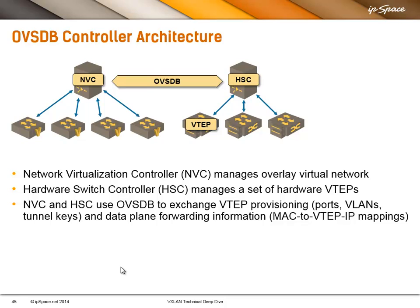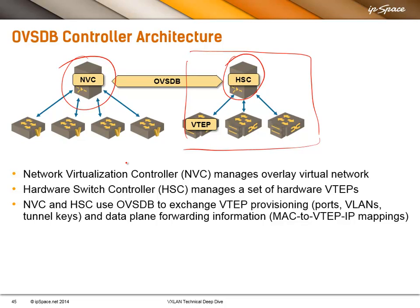The way the OVSDB hardware VTAP schema is defined, you could have a network virtualization controller — NSX, for example — talking to a hardware switch controller, and that hardware switch controller could manage multiple endpoints, multiple VTAPs. Some vendors decided to go down this path: Arista is working on having exactly this architecture, where virtual EOS runs the HSC — the hardware switch controller — and that virtual EOS talks to the individual Arista switches acting as VTAPs. Juniper went for a simpler architecture where the HSC sits on every VTAP, so with Juniper you would have multiple hardware switch controllers talking to the network virtualization controller.